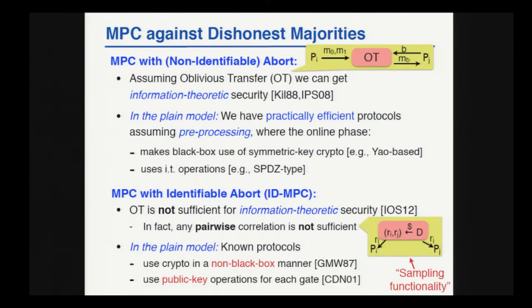In the plain model, if you just want computational security, things are slightly better, but not much better. We don't have any impossibility, but we also don't have efficient solutions. On a high level, we can think of just two types of solutions: one is the GMW solution, which makes use of crypto in a non-black-box manner, and then we have the Cramer, Damgård, and Nielsen solution, which uses public-key operations per gate while evaluating the circuit. Comparing this to the solutions in the non-identifiable abort model with practically efficient protocols, none of them follows this paradigm, so it's not clear whether we can optimize these solutions to get something much better, and there are obstacles.